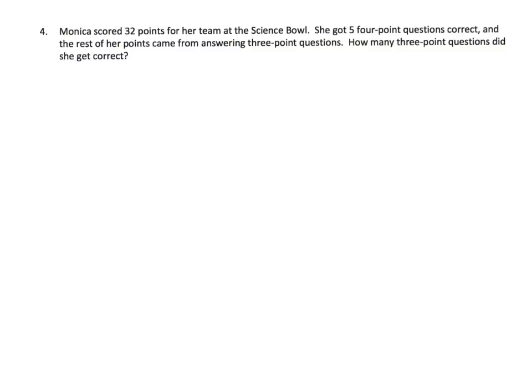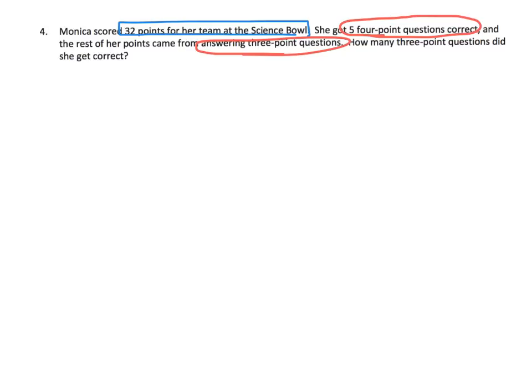Problem 4: Monica scored 32 points for her team at the science bowl. She got five four-point questions correct, and the rest of her points came from answering three-point questions. The question is: how many three-point questions did she get correct? That's quite a mouthful, so let's draw it out carefully.